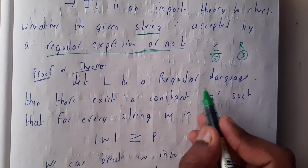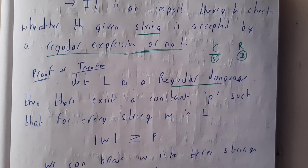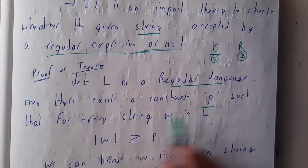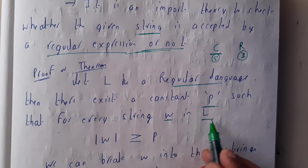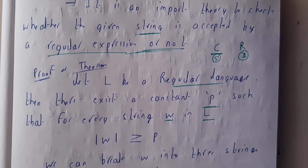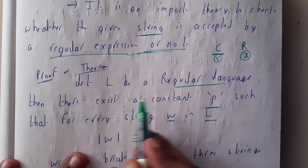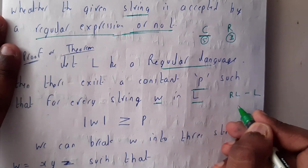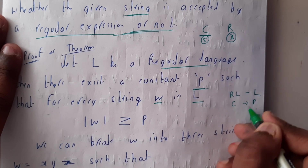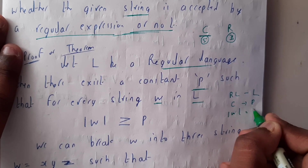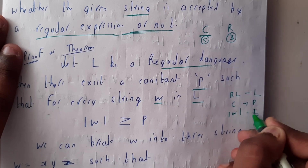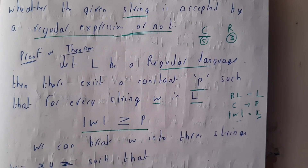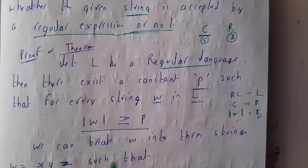The theorem states: let L be a regular language. Then there exists a constant p such that every string w that belongs to L, where the length of the string |w| is greater than or equal to p — that is the first condition.